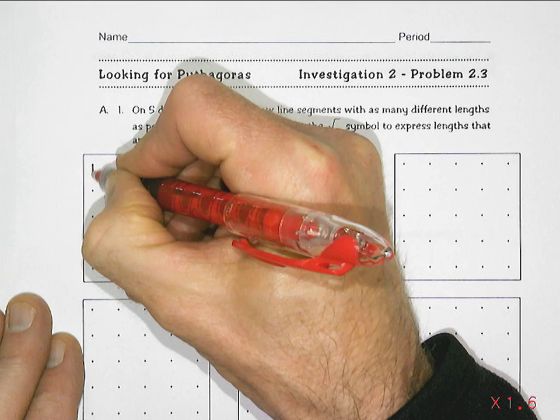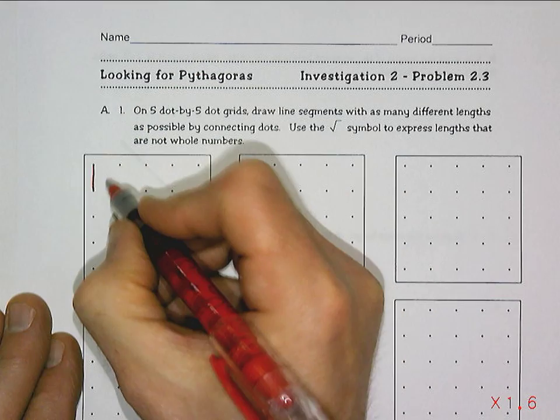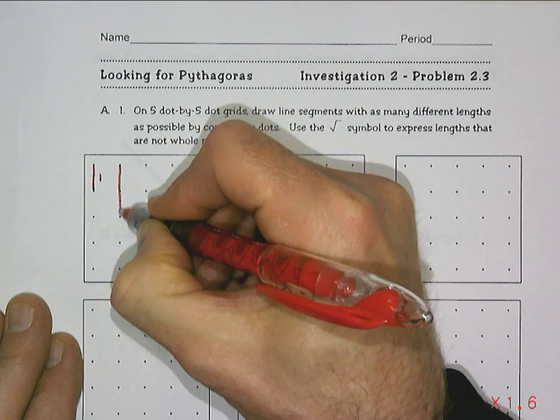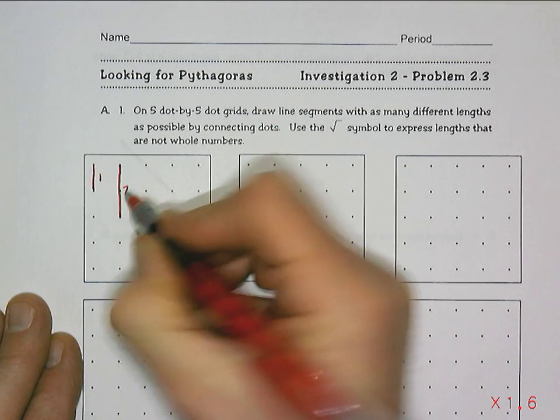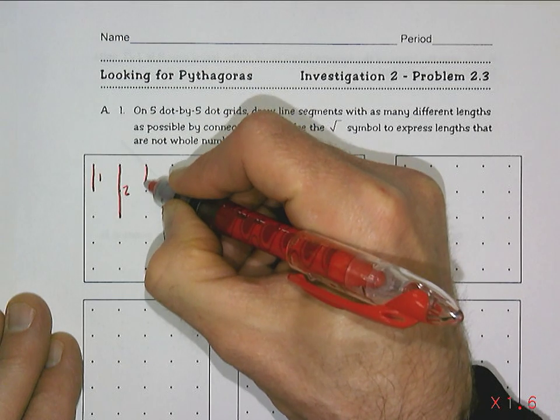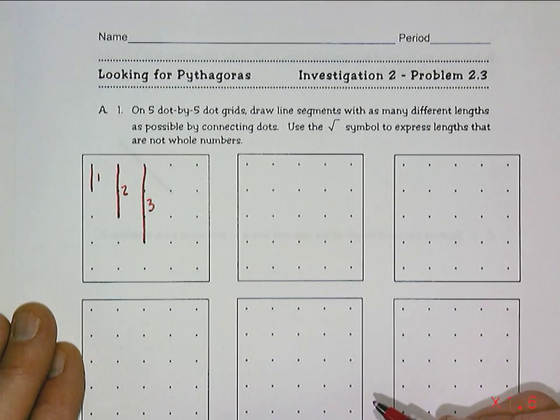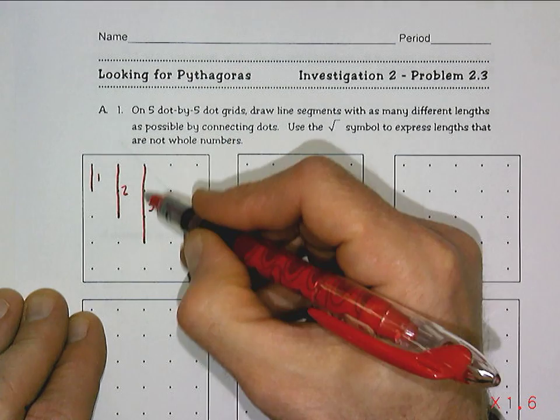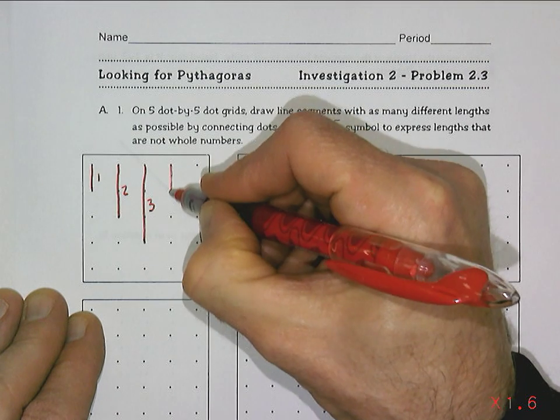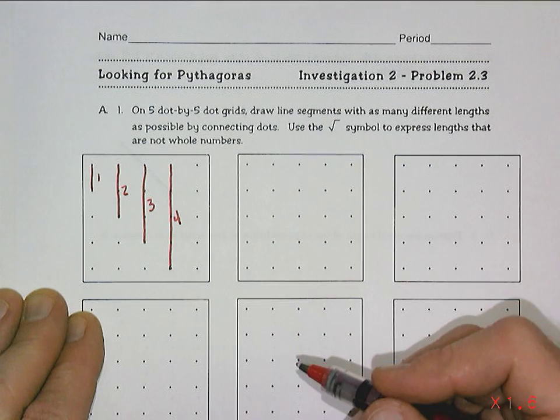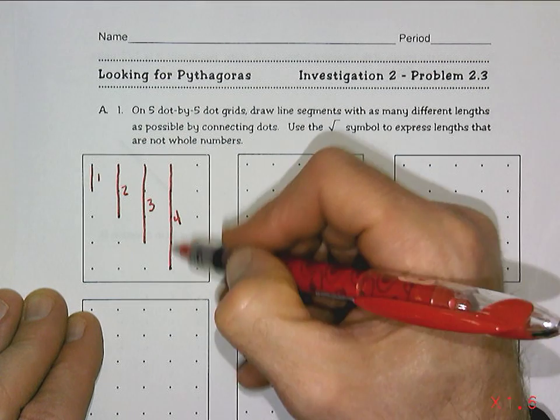So we're going to just start with some real simple ones. We know the length of that line is one unit, not square, not doing squares. The length of this one is two, so we'll do some real simple ones. The length of this one is three. Don't make the mistake of counting the dots. Count the spaces in between: one, two, three units, and then four units, and that's the most we can do.